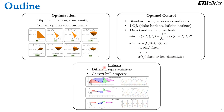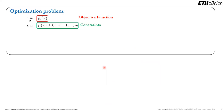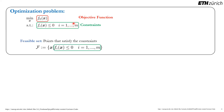So let's start with the first part of this tutorial, which is about optimization. An optimization problem has this form: we want to minimize an objective function, in this case f sub 0, subject to constraints. These constraints say that the decision variable x, when evaluated in f sub i, needs to be less or equal than 0. We have m constraints in total.